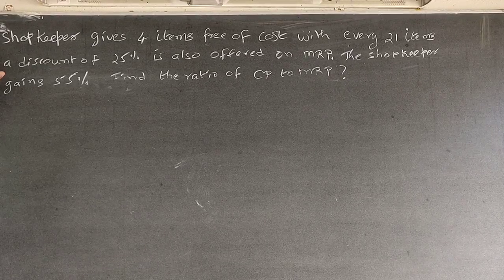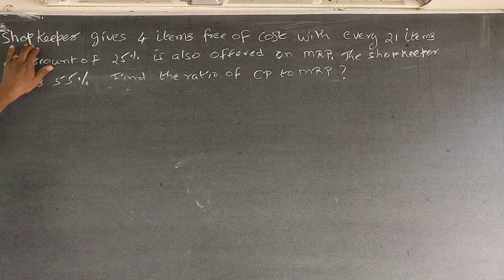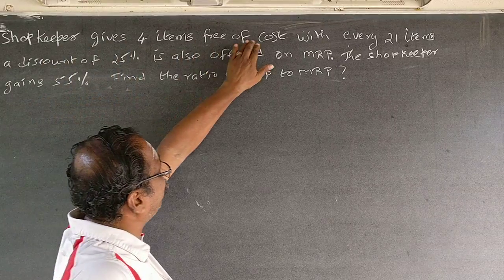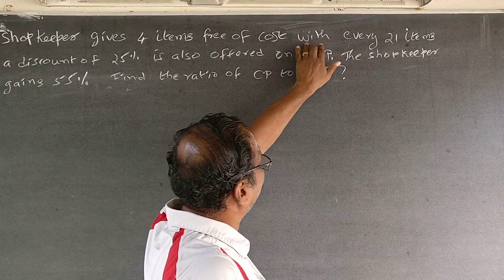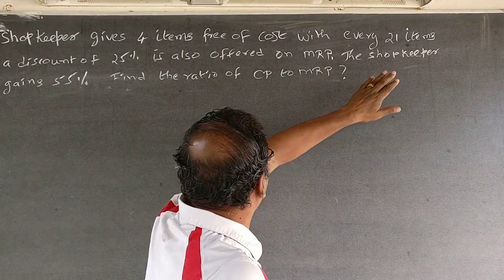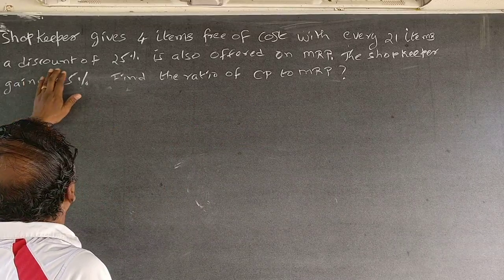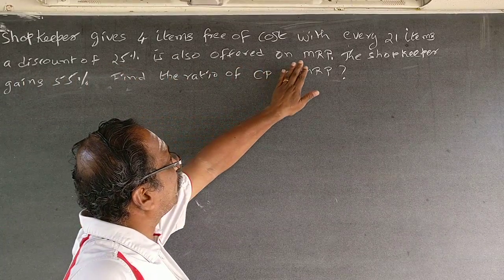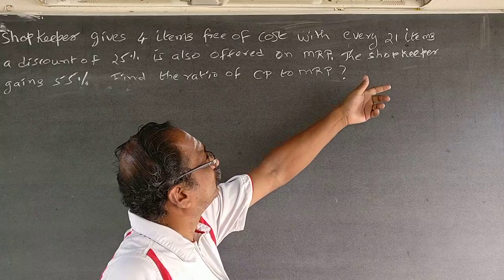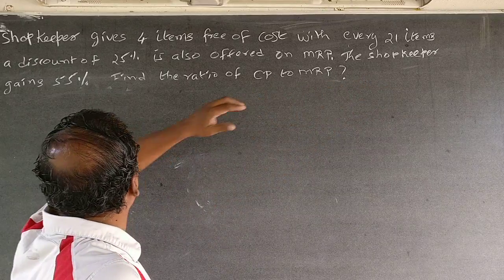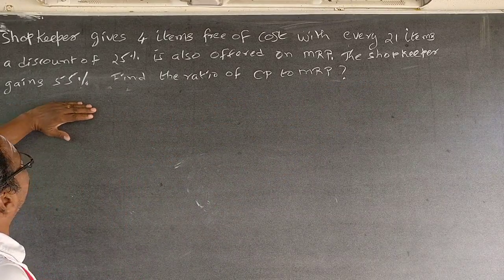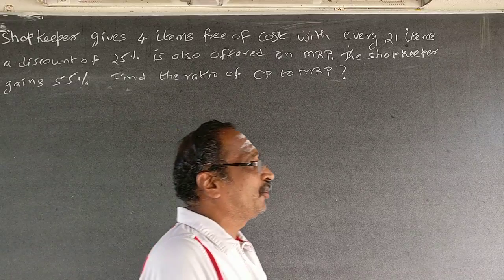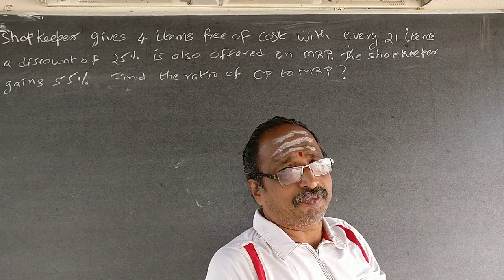A shopkeeper gives four items free of cost with every 21 items, and a discount of 28 percent is also offered on MRP. The shopkeeper still gains 53 percent. Find the ratio of CP to MRP.